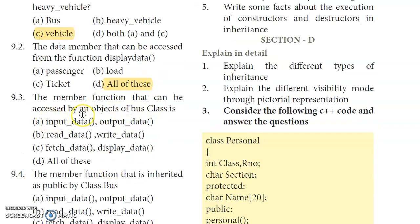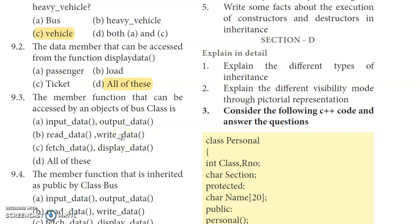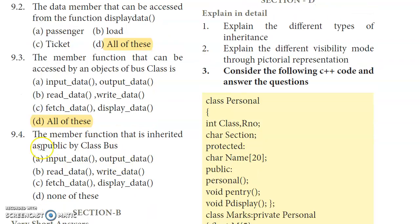Question 9.3: The member function that can be accessed by objects of the Bus class. We check all member functions and their visibility modes. In the Vehicle class: input data and output data. In the Heavy Vehicle class: read data and write data. In the Bus class: fetch data and display data. All member functions are accessible to objects of the Bus class. So the answer is option D — All of these.